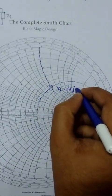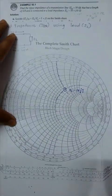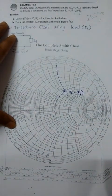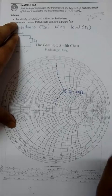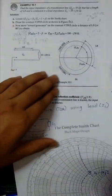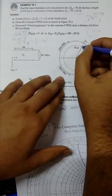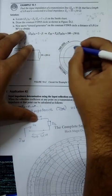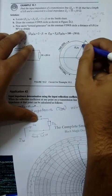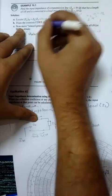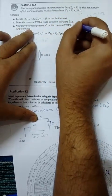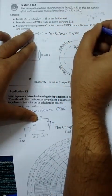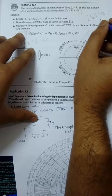Then draw the constant VSWR circle as shown in figure. First you plot ZL, then draw a constant VSWR circle. After that, move towards generator on the constant VSWR circle a distance of lambda by 8.